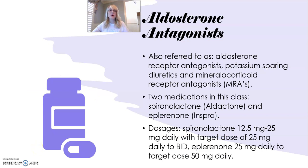Aldosterone antagonists are also referred to as aldosterone receptor antagonists, potassium sparing diuretics, and mineralocorticoid receptor antagonists, or MRAs. Two medications in this class are spironolactone with the trade name Aldactone, and eplerenone with the trade name Inspra. Below I've listed the common dosages that we start at and the target dose.